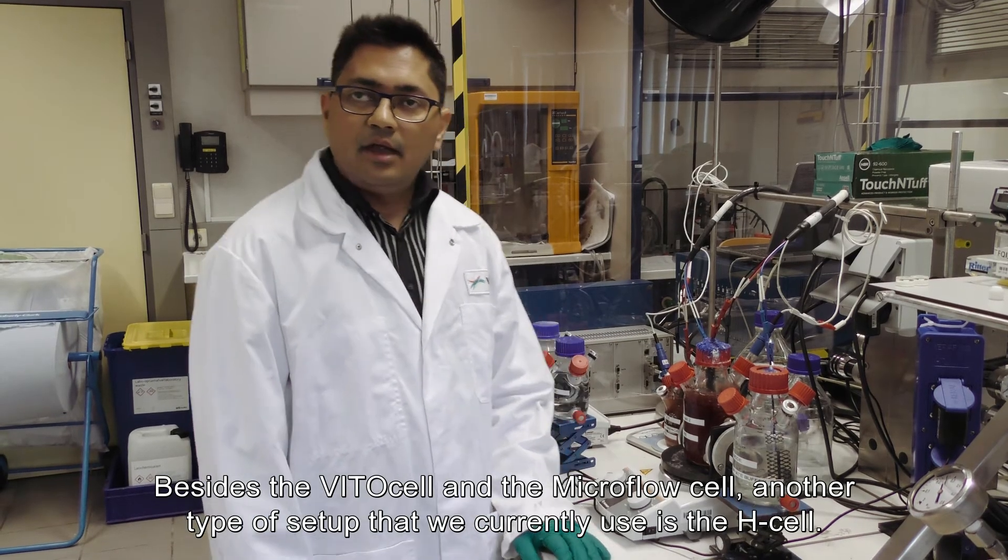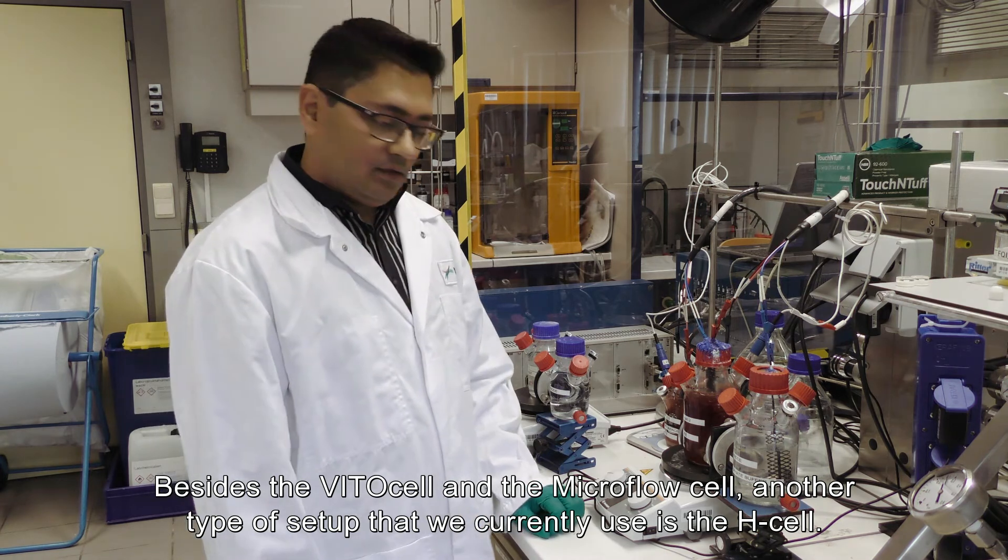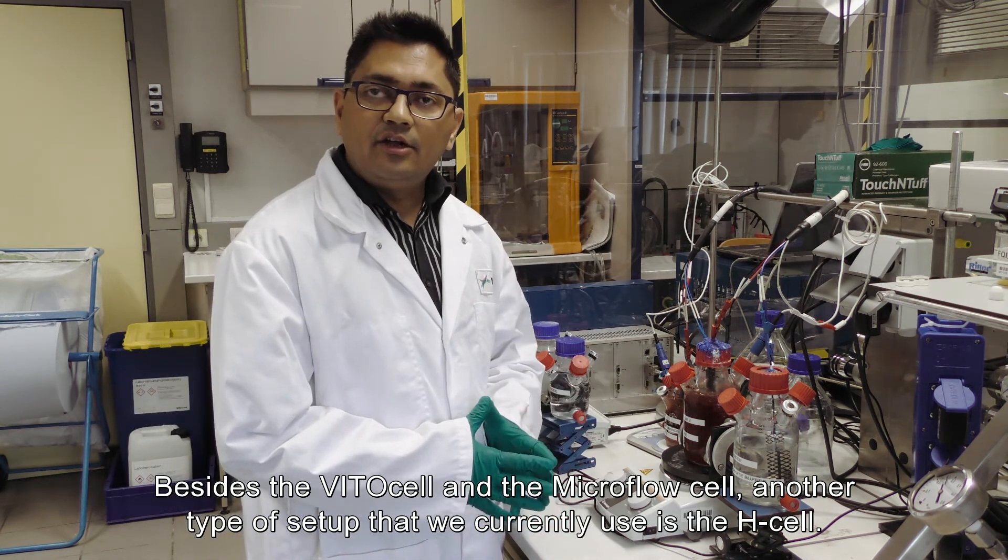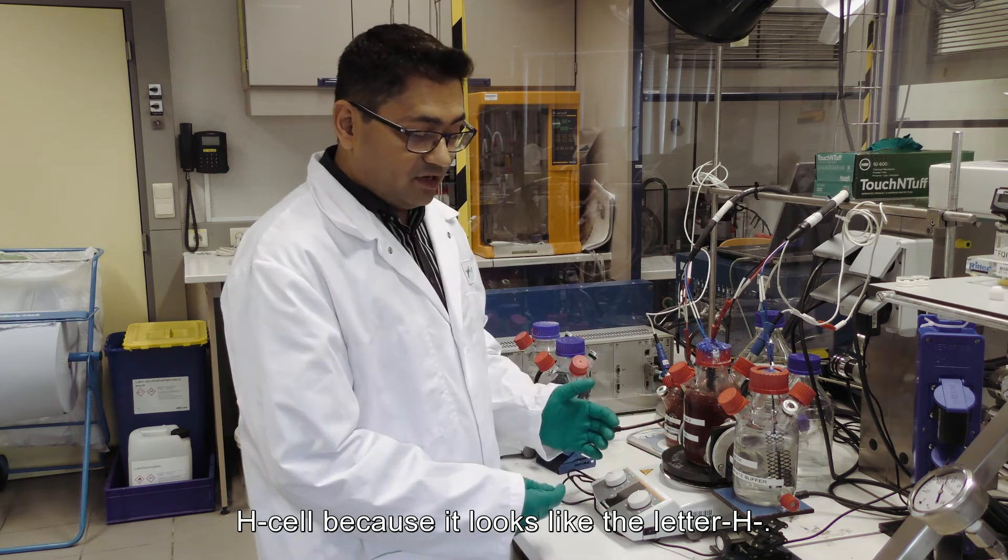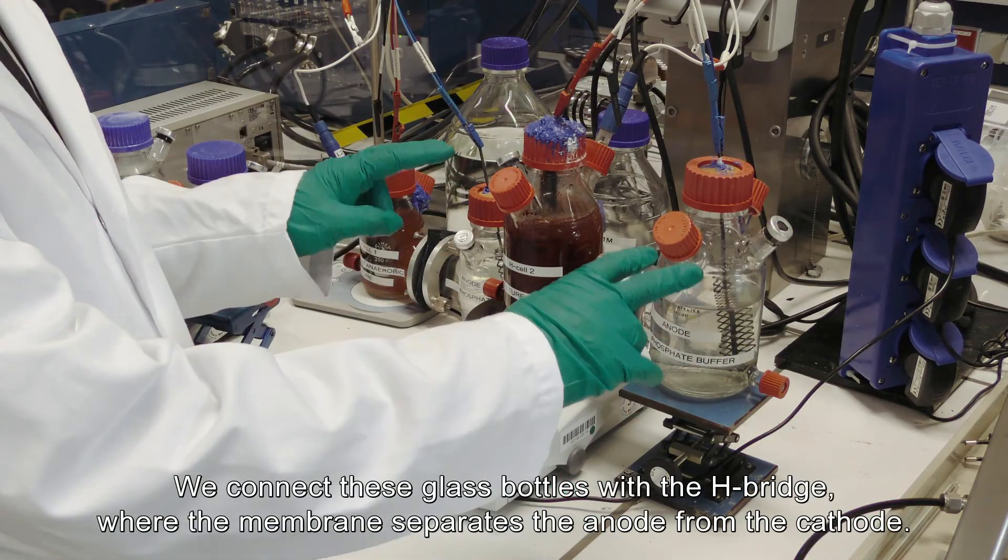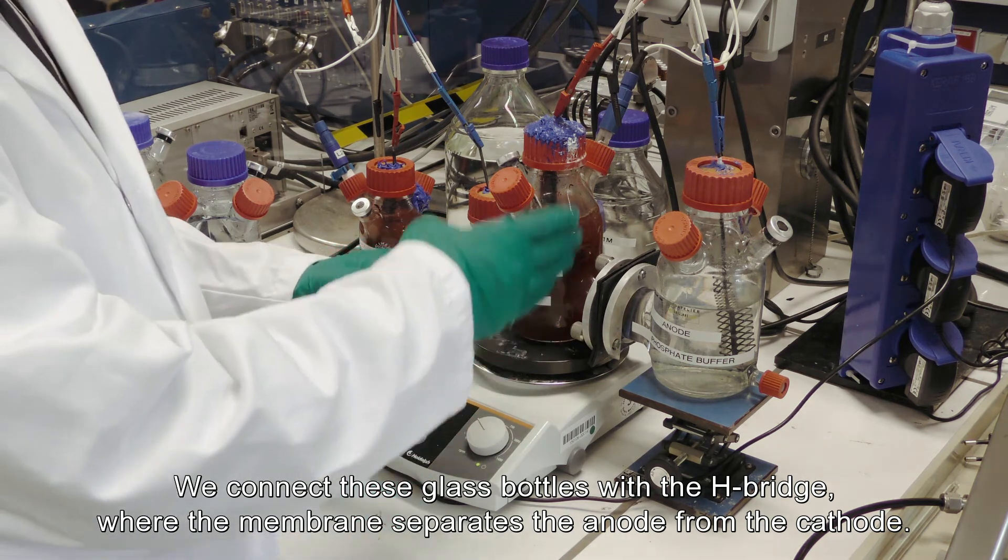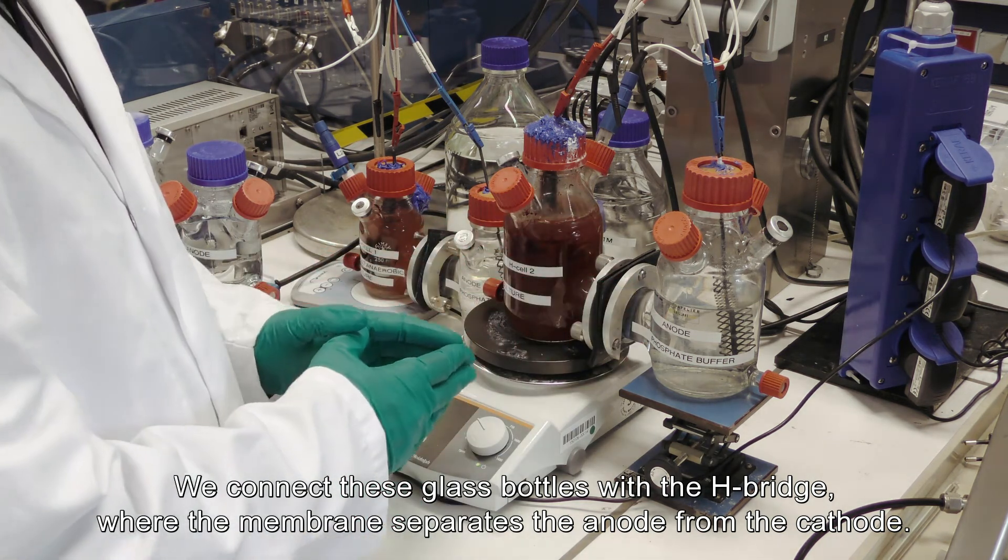Besides the VITO cell and the micro flow cell, another type of setup that we currently use is an H-cell. An H-cell because it looks like the English alphabet H, where we connect these glass bottles with an H bridge where the membrane separates the anode from the cathode.